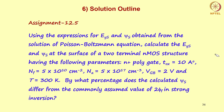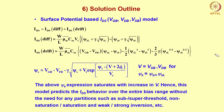One more assignment: using the expressions for Eys and ψs obtained from the Poisson-Boltzmann solution, calculate Eys and ψs at the surface of a two-terminal n-MOS structure with n+ polysilicon gate, oxide thickness tox = 10 Å, fixed charge = 5×10¹⁷ per cm³, Na = 10¹⁷ per cm³, gate-to-bulk bias = 2 V, and temperature 300 K. Find by what percentage the calculated ψs differs from the commonly assumed value of 2φf in strong inversion.